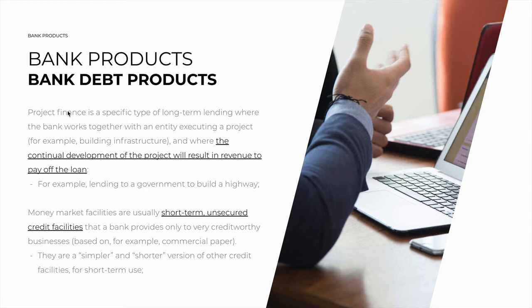Another type is project finance — a specific type of long-term lending for projects. These are usually situations where the bank works very closely with the entity executing the project, usually something related to infrastructure, like a power plant or a highway. The borrower may even be a government or a big corporation. What happens is that the continual development of the project will result in revenue that pays off the loan over time — the project pays for itself as it's being built. For example, lending to a government to build a highway: they need $100 million for the first part, then toll money starts coming in and starts to pay off the debt, providing more cash flow to finance further development.